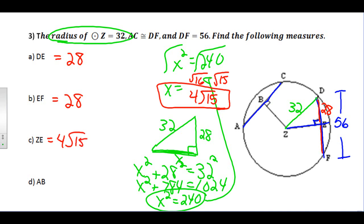And the last one: how long is AB? Well, AB would have to be the same length as DE and EF were because AC and DF were congruent, and they're both getting bisected. That would also be 28.